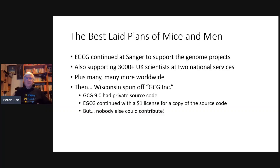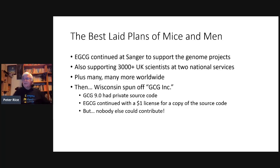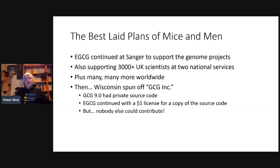While I was at EMBL in Heidelberg, there were many requests for new programs. I was supporting GCG, the source code was there, and so we started writing new programs. These went through various name changes and finished up being called eGCG — extended GCG. In seven years in Heidelberg, we went up to GCG version 8 and eGCG version 8. Then I moved from eGCG and went to Sanger to join the new genome projects, supporting some 3,000 UK scientists at two national services running eGCG.